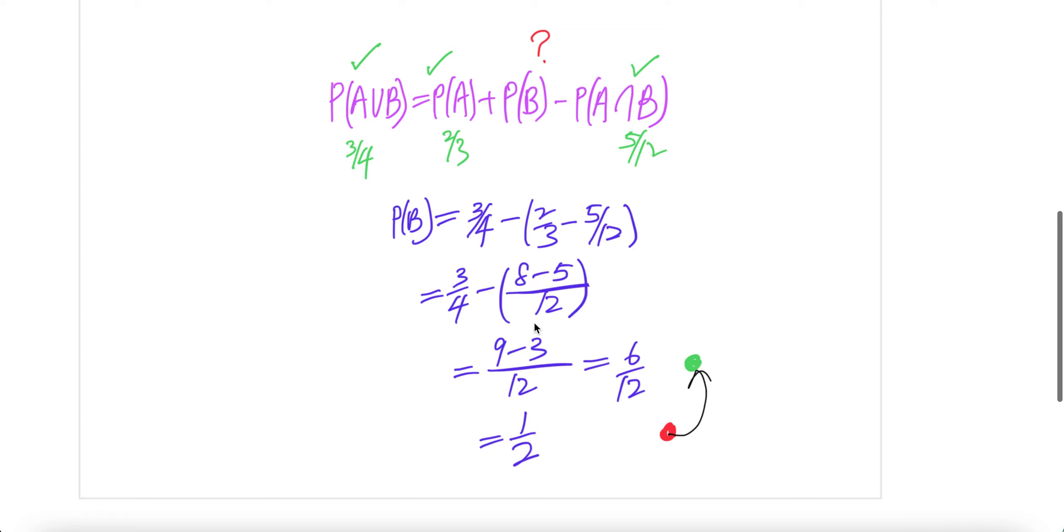This one, you get eight minus five. It will be three over 12. So, three over 12 here.